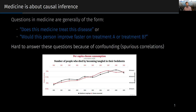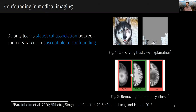But it's hard to answer these questions because of confounding — spurious correlation, or association because of a common cause. Confounding can statistically associate completely unrelated factors, as shown in this example relating cheese consumption and people dying from becoming tangled in their bedsheets.